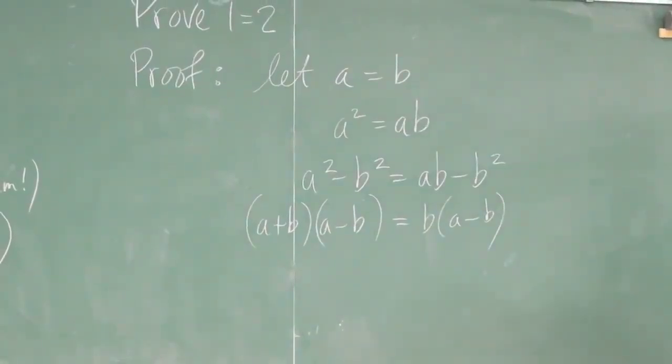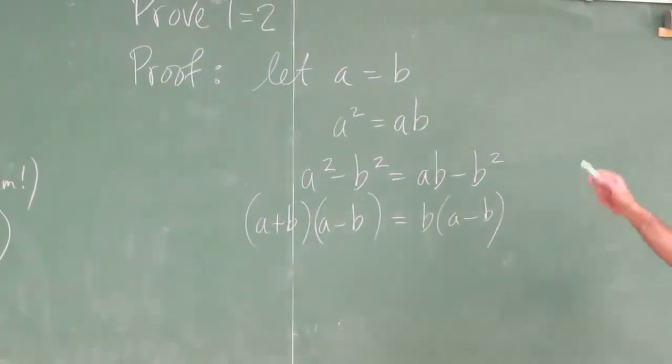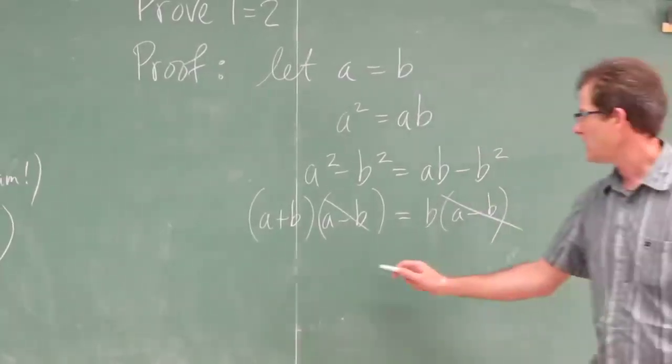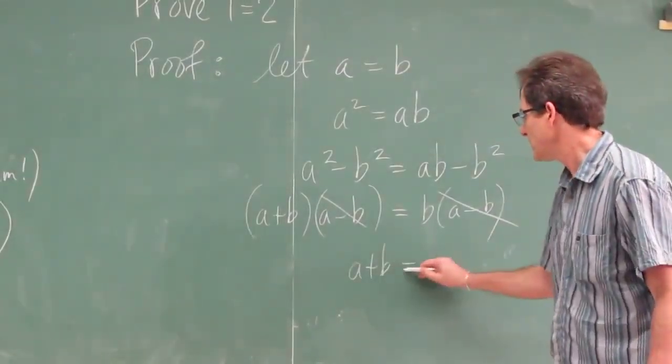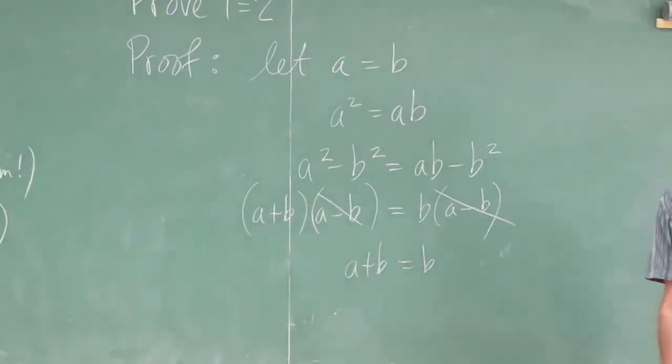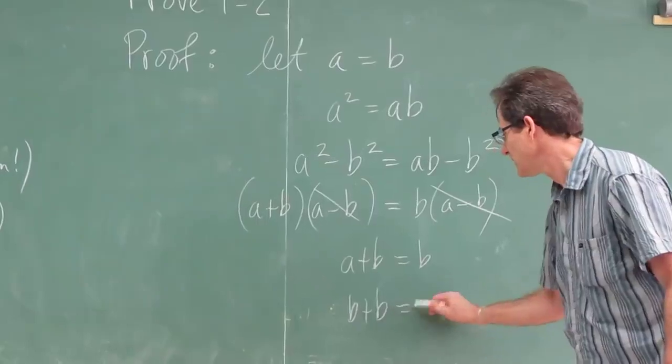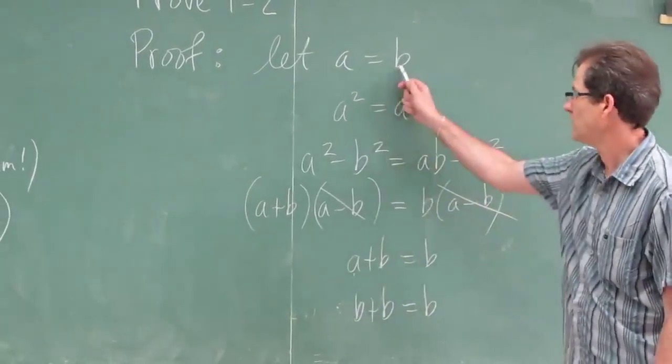Now, we're drawing down before you say anything. At this point, I can divide both sides by a minus b. I can just cancel a minus b. So I get a plus b equals b. But a is equal to b. So that's the same as b plus b equals b, because a is equal to b.